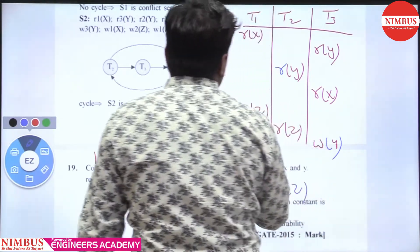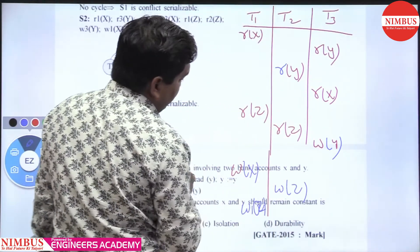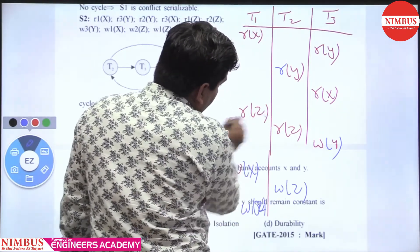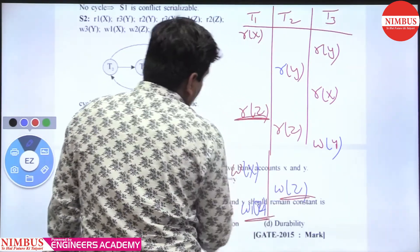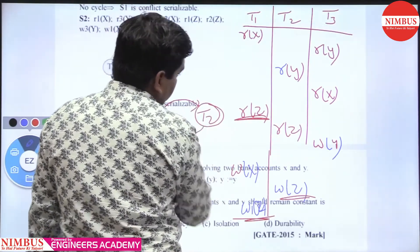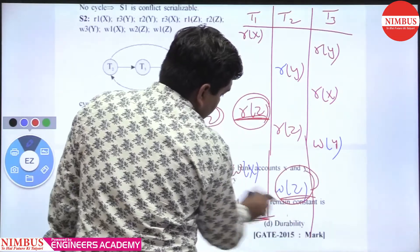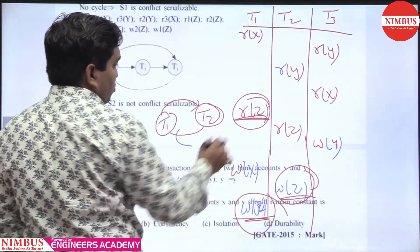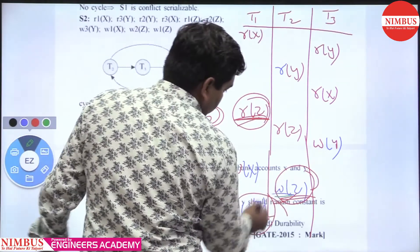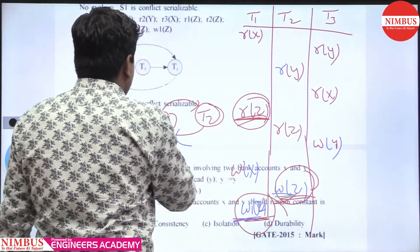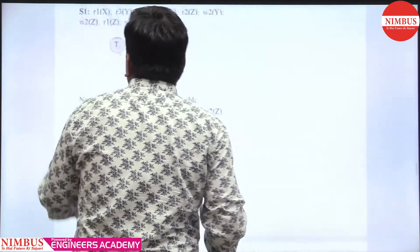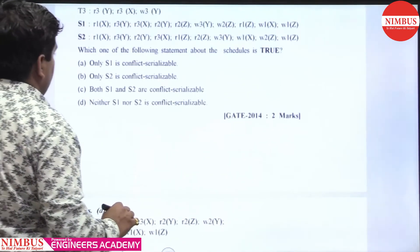For Z in S2, you can see there is an edge from T1 to T2 and also from T2 to T1. There is an edge between T1 to T2 and T2 to T1, forming a cycle. Because of this cycle, S2 is not conflict serializable.